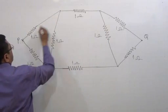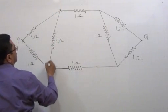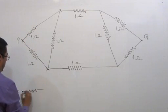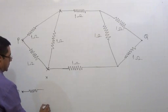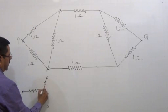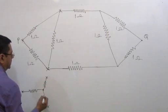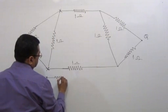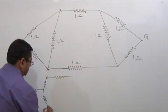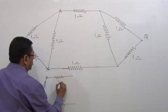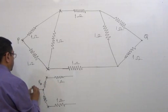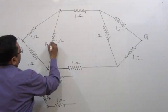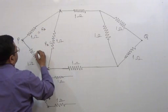This is a delta combination — first point, second point, third point. I can easily convert it into star form. First point is this, second point is this, third point is this, so it may be converted into star form for simplicity. One, two, three — one resistance is one ohm, one resistance is one ohm, one ohm, one ohm. This unknown value is called r_star, and r_delta is one ohm.